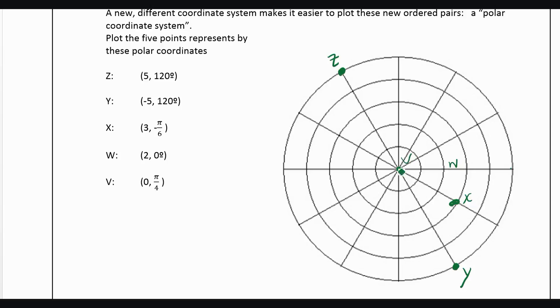And this kind of brings up a good point. That rotating pi over 4, if we're at 0, really doesn't do anything. So the origin can actually be written in polar coordinates as 0 and then any angle. And kind of the weird thing about polar coordinates that doesn't happen in rectangular coordinates is you have more than one way to write the same point. So let's just look at Z here, 5, 120.